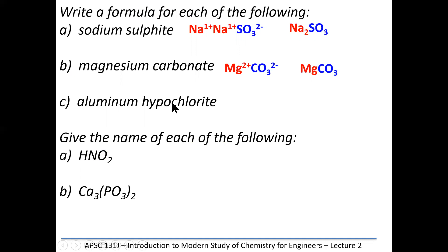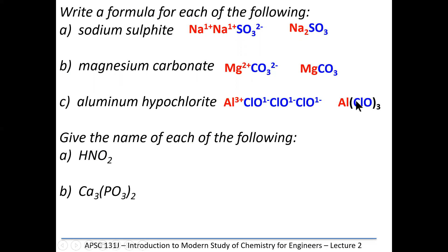Sodium sulfite: sodium is Na⁺ one plus; sulfate is SO₄²⁻, so sulfite is SO₃²⁻ (take off an oxygen). We need two sodiums — Na₂SO₃. Magnesium carbonate: magnesium is always positive two; carbonate comes from carbonic acid H₂CO₃, so carbonate is CO₃²⁻. It's a one-to-one ratio: MgCO₃. Aluminum hypochlorite: hypochlorite is ClO⁻ one minus (chlorate ClO₃ → chlorite ClO₂ → hypochlorite ClO). Since aluminum is always positive three, we combine three ClOs with aluminum: Al(ClO)₃. For calcium phosphite: calcium is always plus two, no need for oxidation state in name. PO₄ is phosphate, PO₃ is phosphite — calcium phosphite. Spelling is critical — phosphate vs. phosphite is either right or wrong.